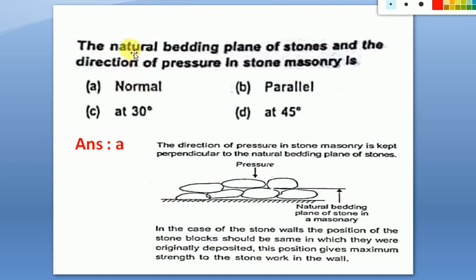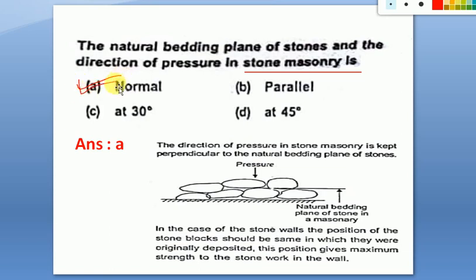Next question: the natural bedding plane of stones and the direction of pressure in stone masonry is always normal. The direction of pressure in stone masonry is kept perpendicular to the natural bedding plane of the stones. The stone blocks should be placed in the same position as they were originally deposited, which gives maximum strength to the stone work in the wall.